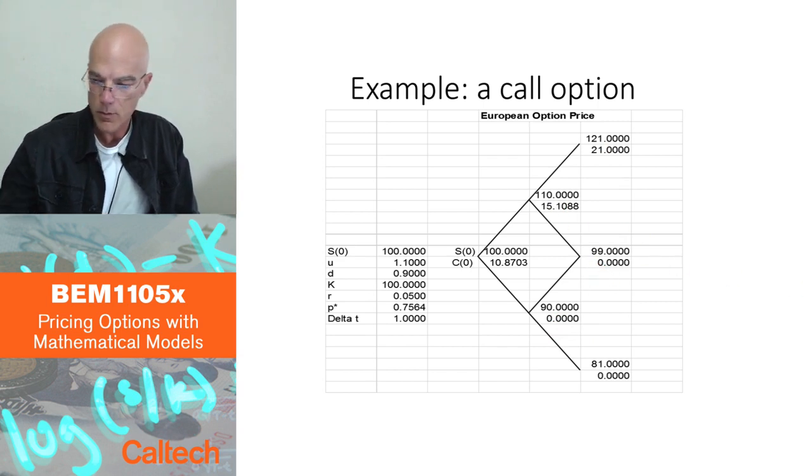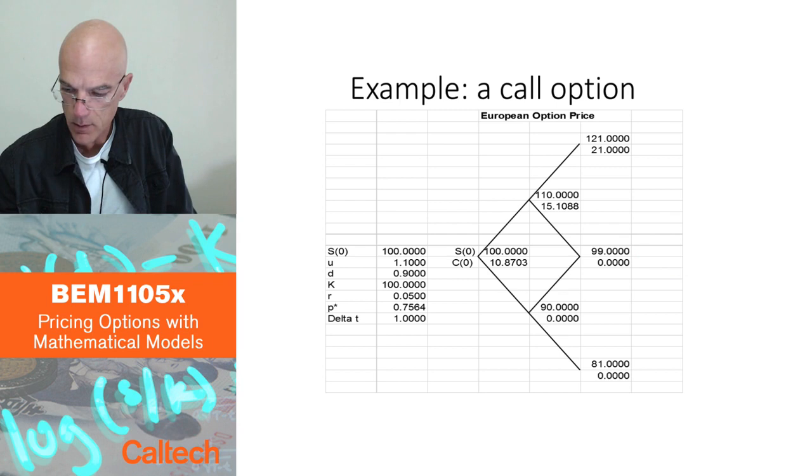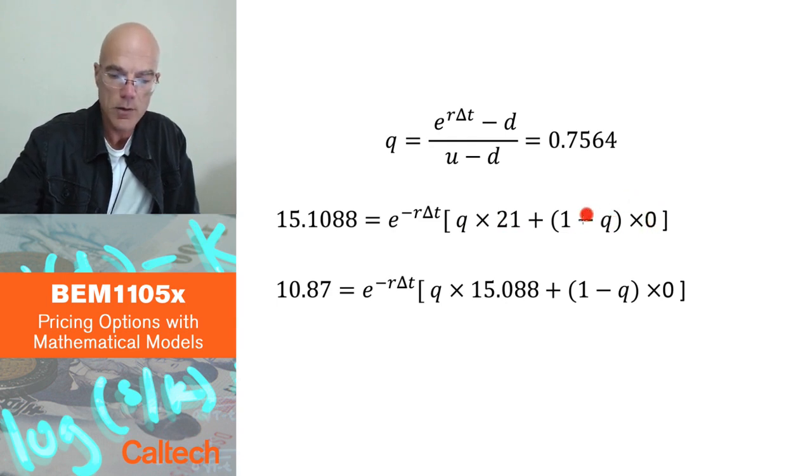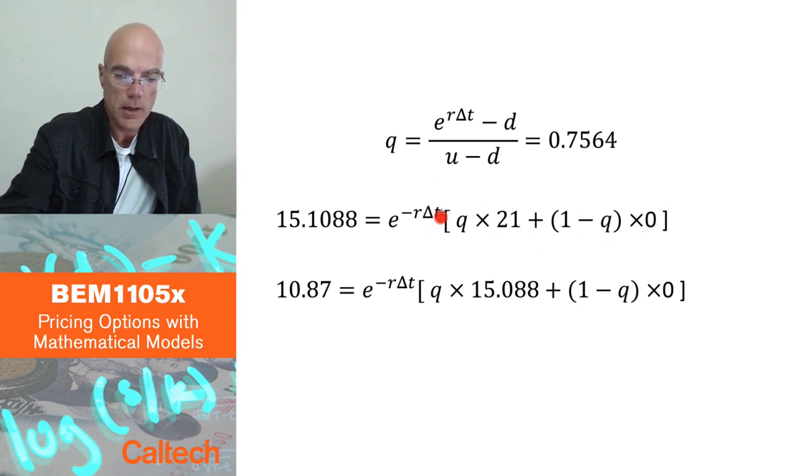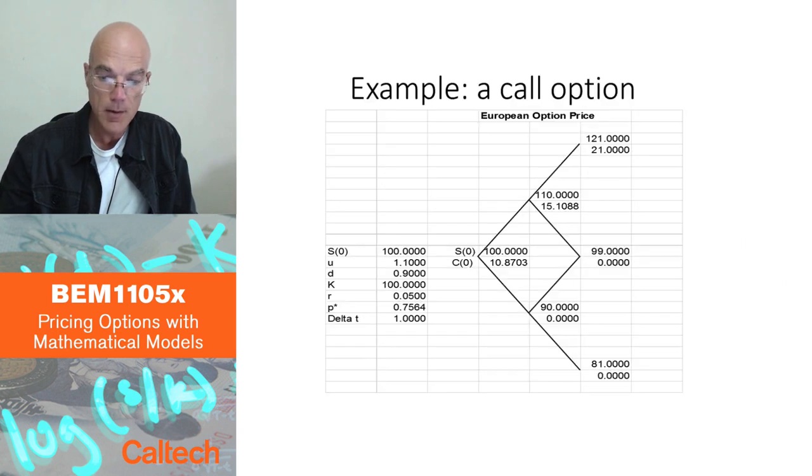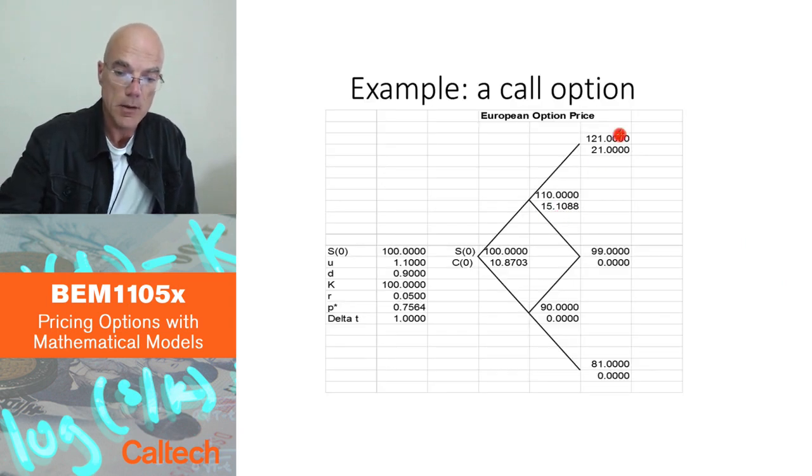Here, I'm averaging 21 and 0, and then I have to discount. So this is the number. Let's go back to the next slide, where this is done. I'm averaging 21 times q, plus weighted average by q's, and 0 times 1 minus q. And then I have to discount. I use my q from here. If you do the computation, it should be 15 something, 15.11, or something like that. So that's how I get this number. I just average these two by q's, discounted.